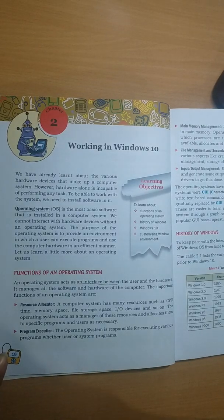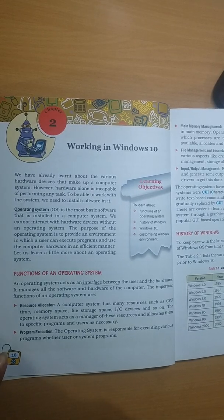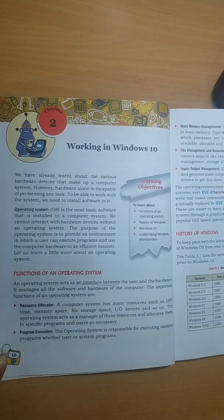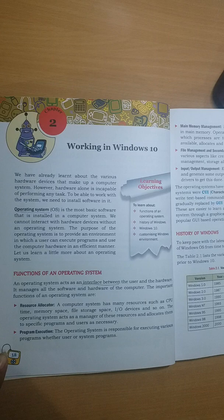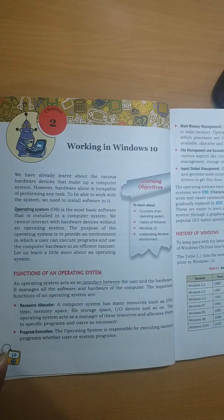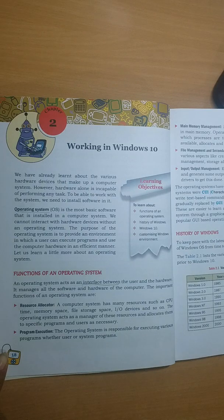Secondly, program execution. The operating system is responsible for executing various programs, whether user-generated programs or system programs. Whenever we give a request to the computer to open a particular software, it works according to the space available, searches for that program, and then executes it.